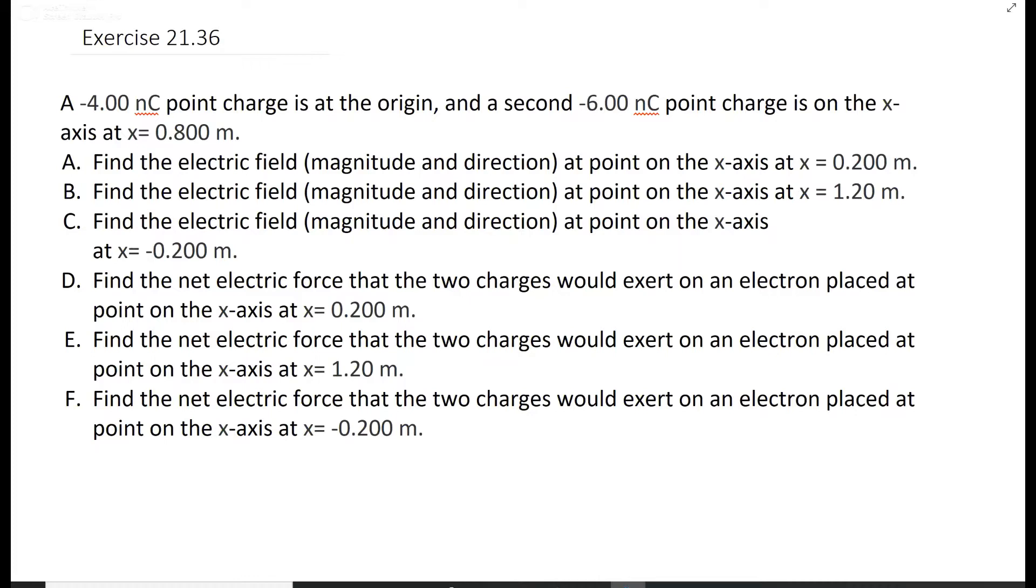The first ABC is finding the electric field at some points, 0.2, 1.2, and negative 0.2, and then the D, E, and F are finding the electric force at those same points.